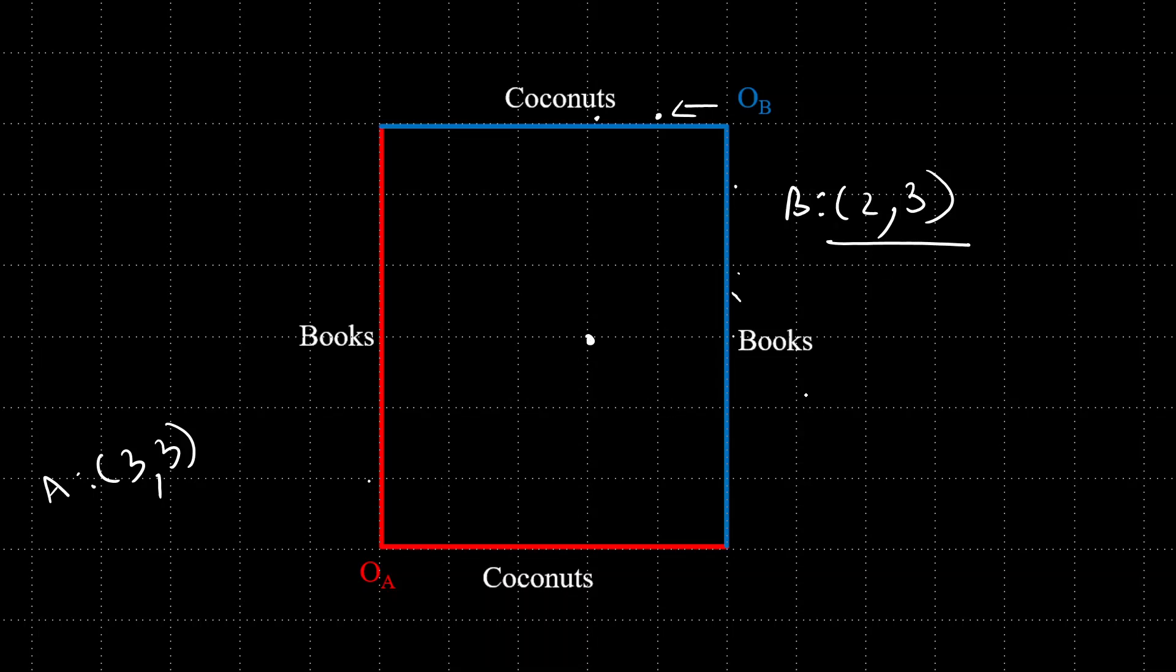Usually you're not given a box like that in your textbooks, you'll be provided with the respective allocations. So they'll be like A has three coconuts and three books, B has two coconuts and three books. So in some sense, they're also giving you the dimension of the Edgeworth box. So the length becomes three plus two, five and the breadth becomes six units, right? Which is the condition in this case as well. Anyway, hopefully you're getting around what this box represents.